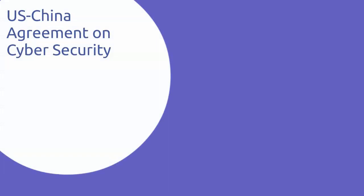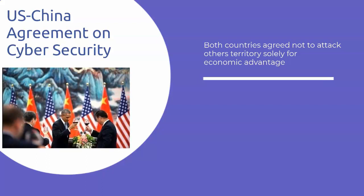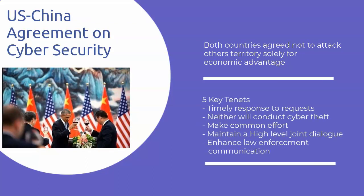The last framework is the U.S.-China Agreement on Cybersecurity. As per this agreement, the leaders of both countries agreed not to attack companies based in the other's territory solely for economic advantage. There are five key tenets. The first tenet discusses timely responses to requests for information and assistance regarding malicious cyber activities.